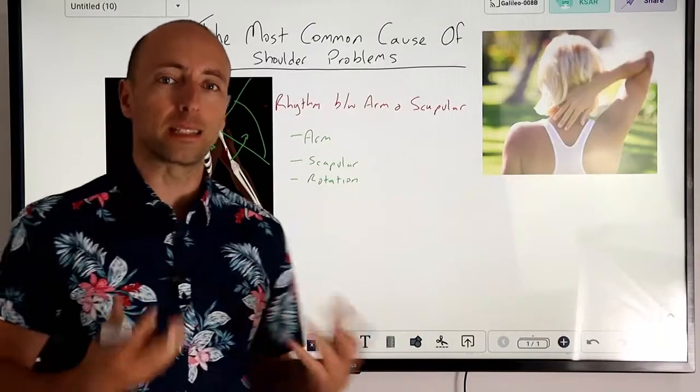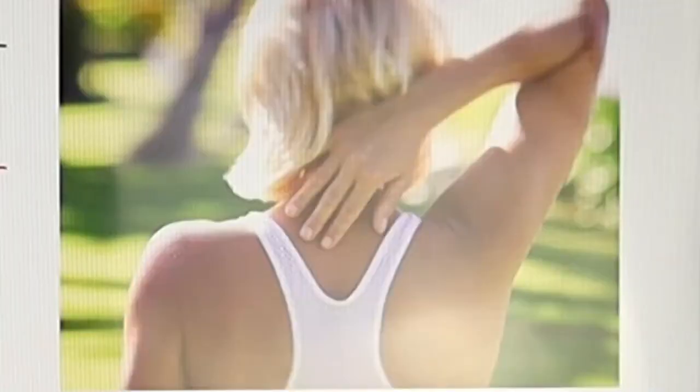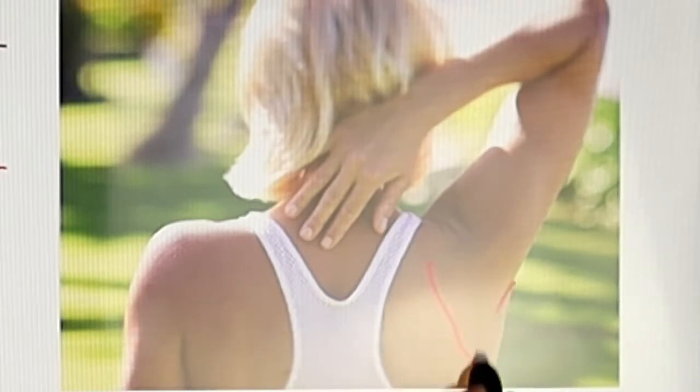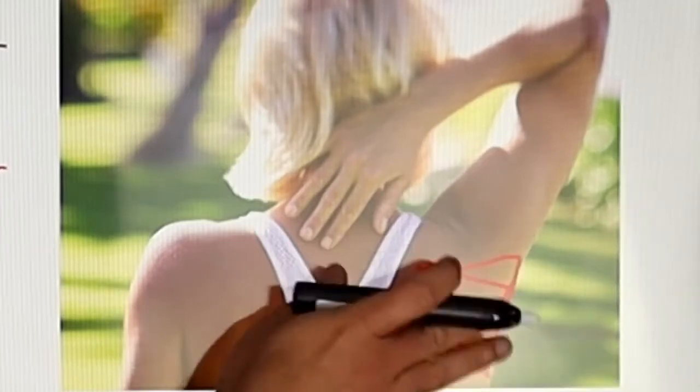When we look at a person who comes up here who has their arm right up, really what we're now seeing is this shoulder blade sitting something like this down here, so we've got this big rotation that's occurred.